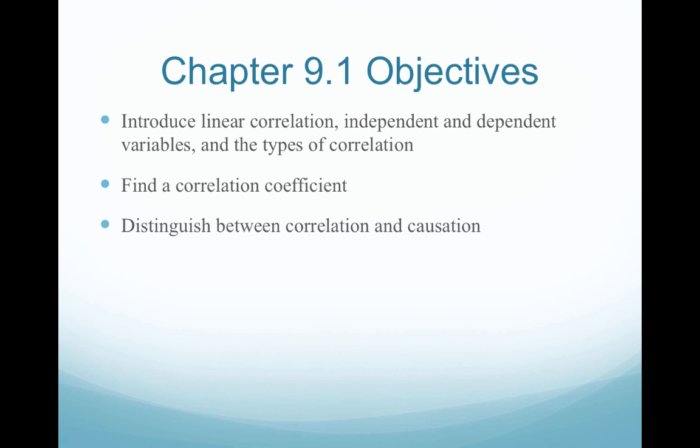We're going to find something called the correlation coefficient, and then we're going to distinguish between correlation and causation. This is probably one of the biggest issues in statistics — so often people mistake statistics as giving us causation.